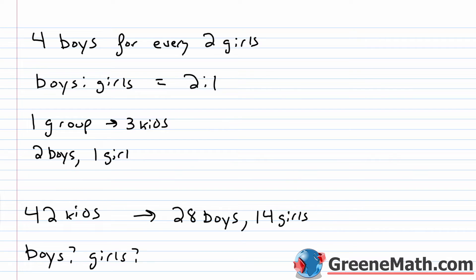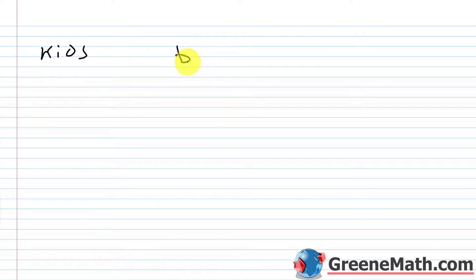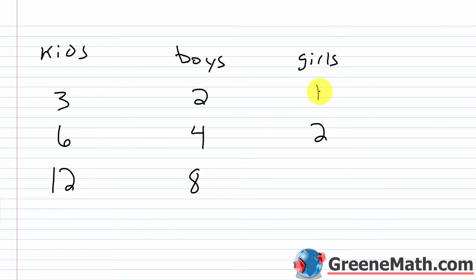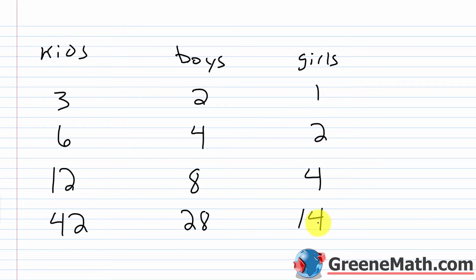To make this clearer, here's a chart with columns for total kids, boys, and girls. If 3 kids attend: 2 boys, 1 girl. If we go to 6 kids, we double everything: 4 boys, 2 girls. Going to 12 kids means multiplying the original by four: 8 boys, 4 girls. Taking this all the way to 42 kids — that's 14 times the original — gives us 28 boys and 14 girls.